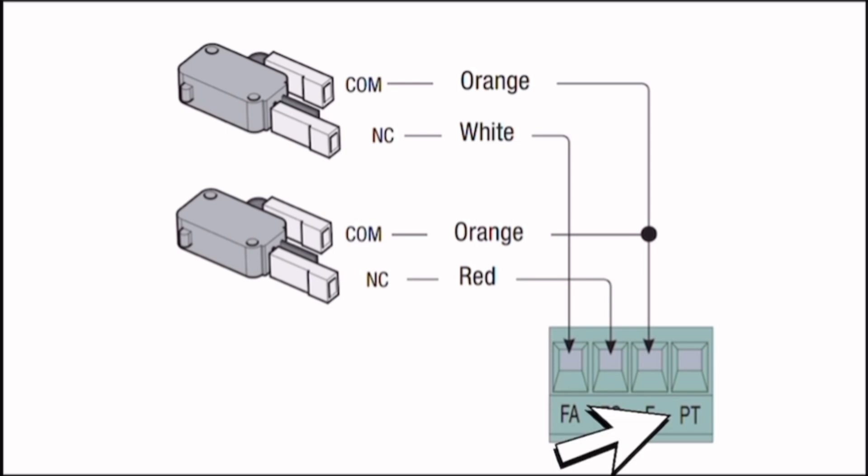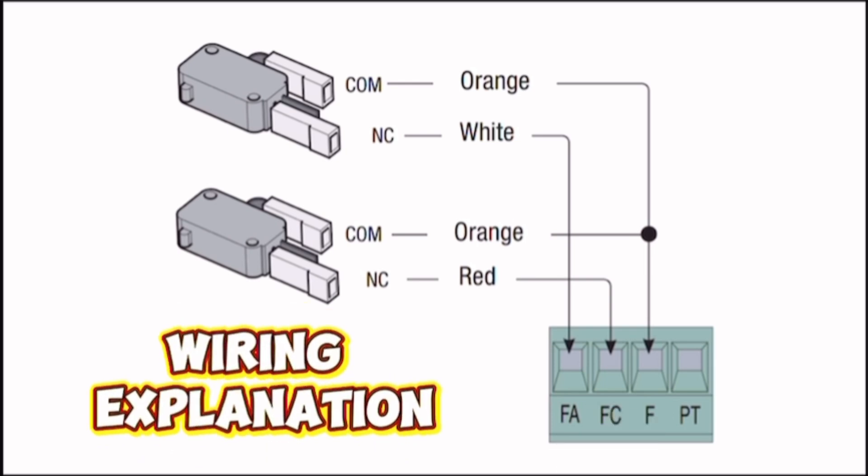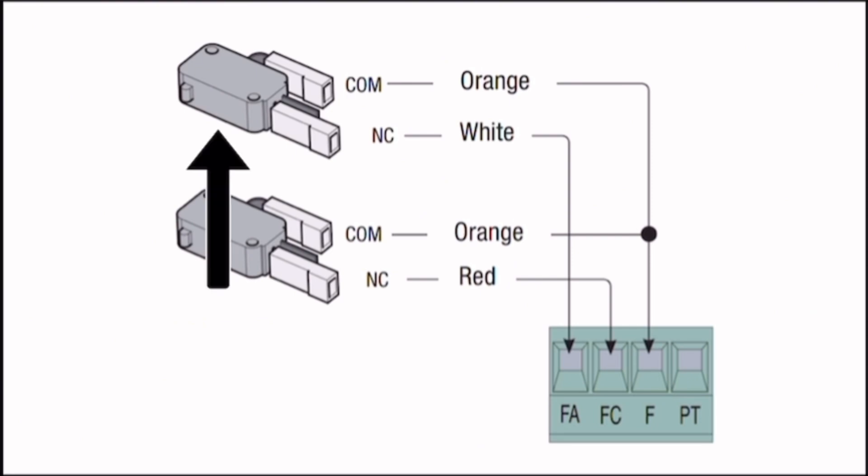P.T. - Additional Terminal for Accessories or Sensors. Wiring Explanation: Upper Limit Switch Open Position - The COM (orange wire) connects to the same F terminal on the control board. The NC (red wire) connects to the F.A. terminal, representing the fully open position.